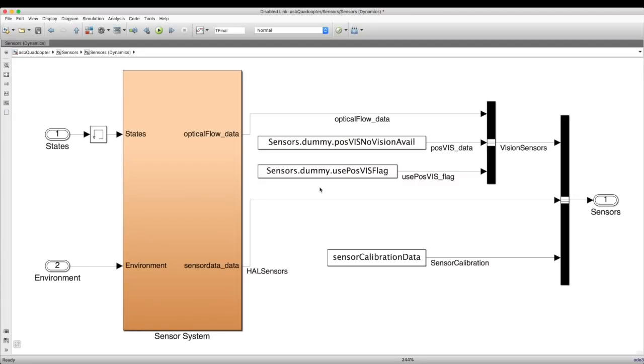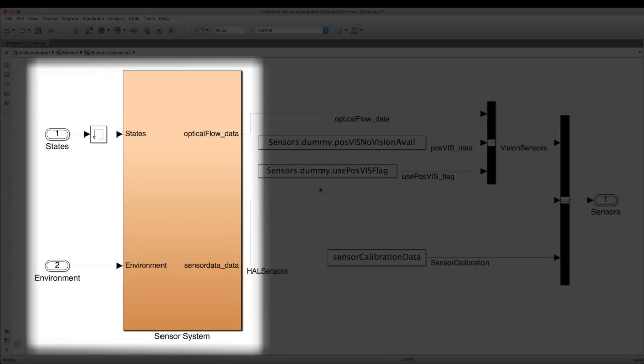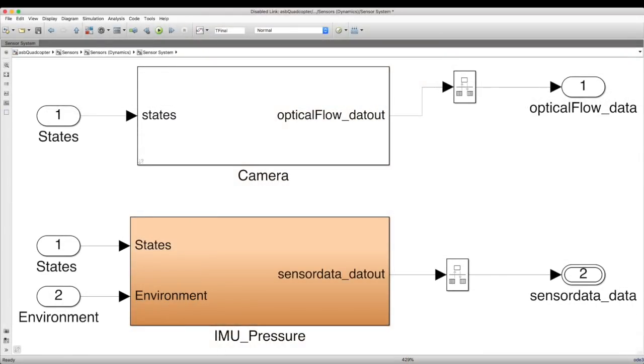So inside this subsystem, there are some hard-coded sensor calibration data and a block called Sensor System that houses the models for the camera, the IMU, the ultrasound, and the pressure sensor.